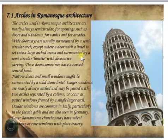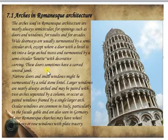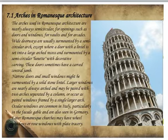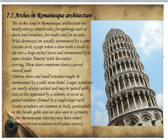Doors are sometimes surmounted by a semicircular lunette with decorative carvings. Doors sometimes have curved centers. Narrow doors and small windows might be surmounted by a solid stone lintel. Larger windows are nearly always arched.